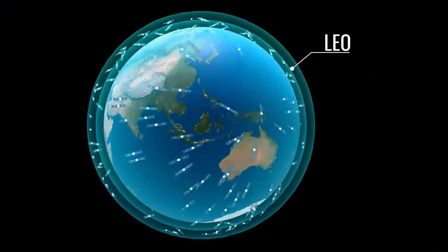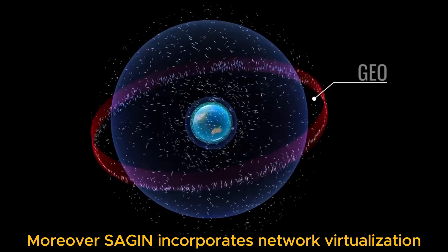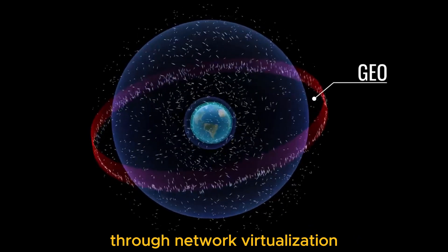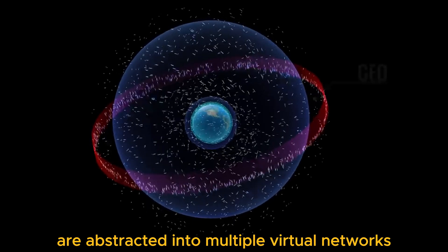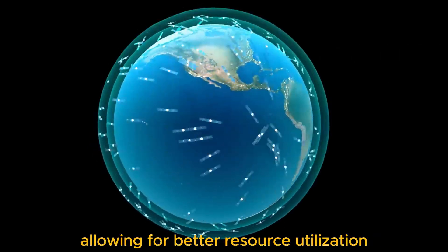Moreover, SAGIN incorporates network virtualization, a game-changer in network infrastructure. Through network virtualization, the physical network resources are abstracted into multiple virtual networks, allowing for better resource utilization, flexibility, and isolation.